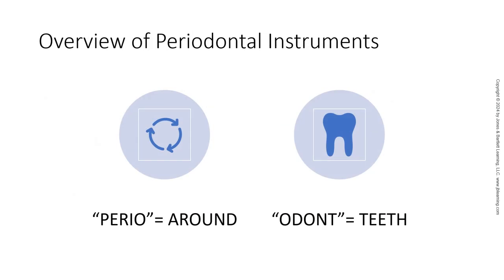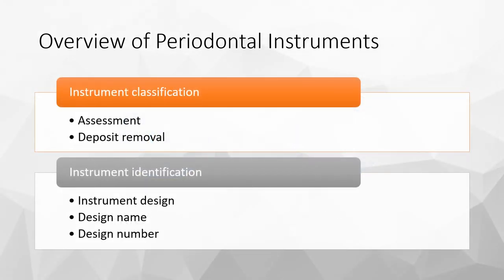Instruments refers to instruments used around the teeth. There are a number of available instruments and designs available for use, so we need to understand how to identify the instrument and use it properly. Instrument classification includes assessment and deposit removal. Instrument identification is going to be based on the instrument design, the design name, and the design number.